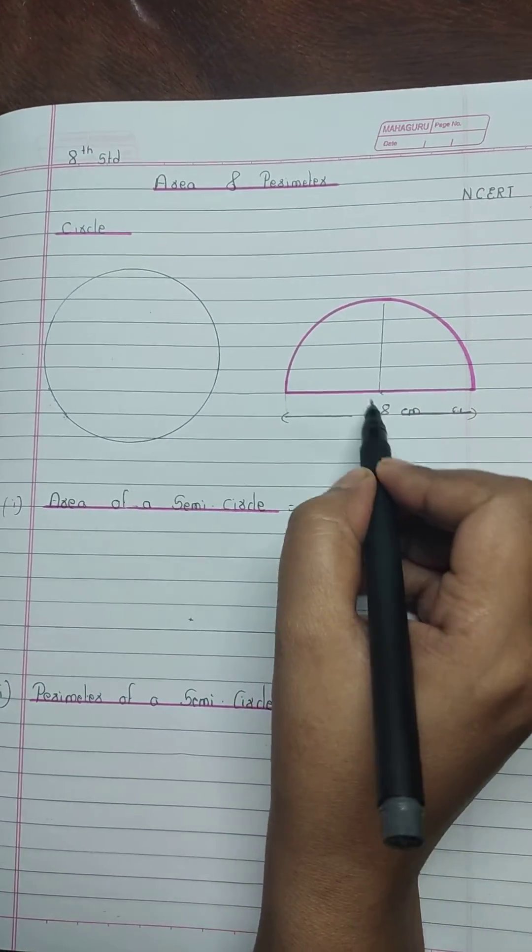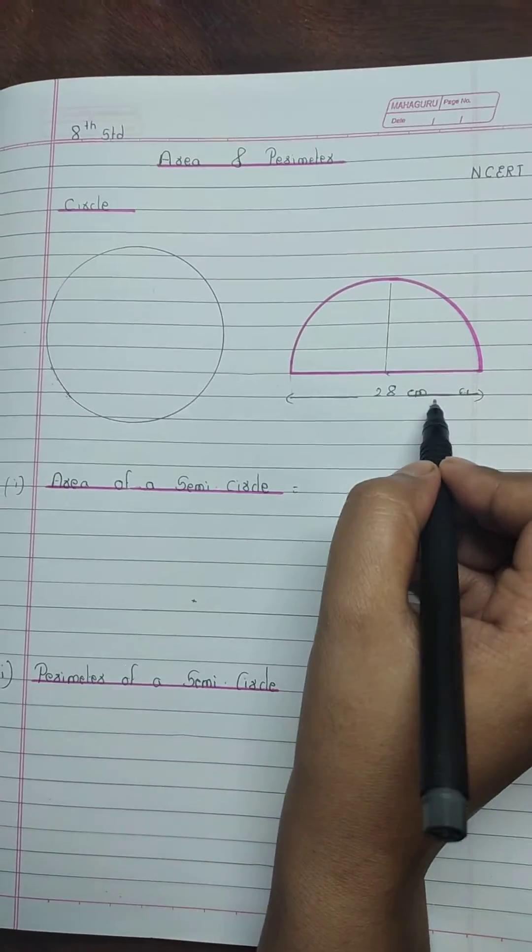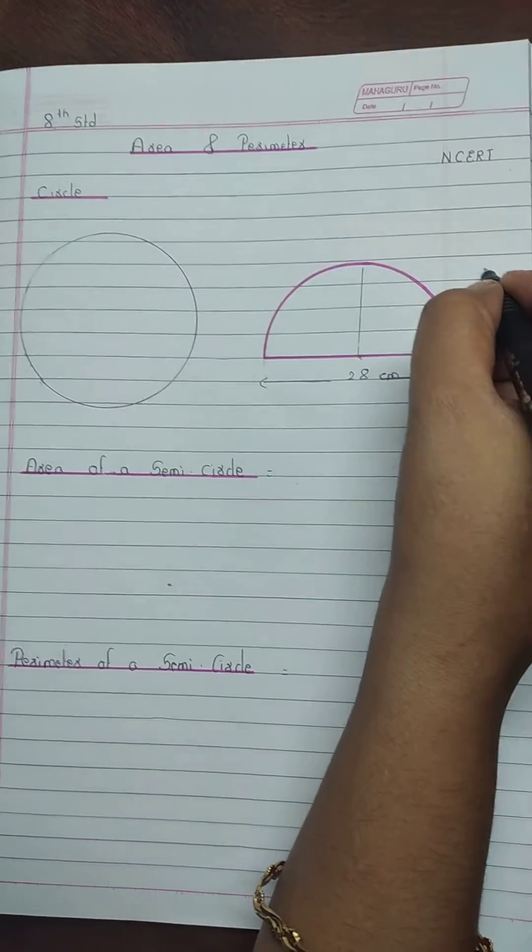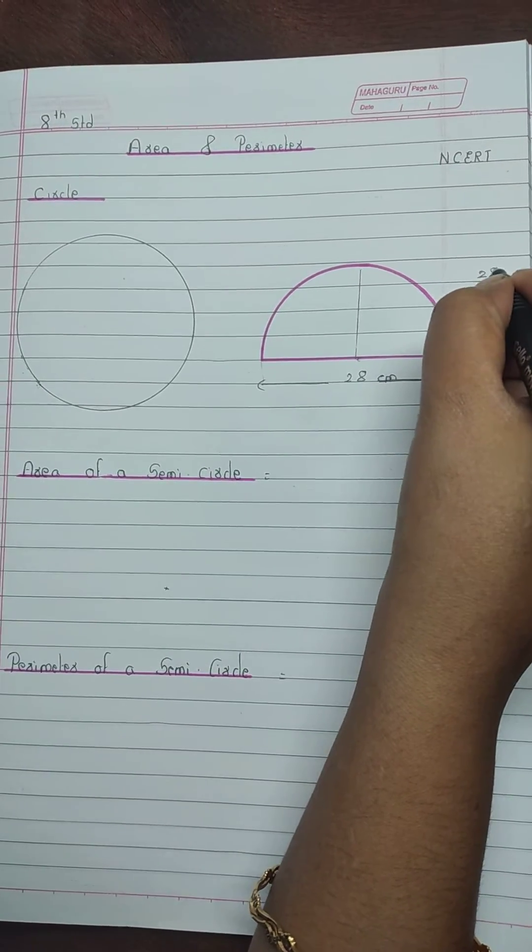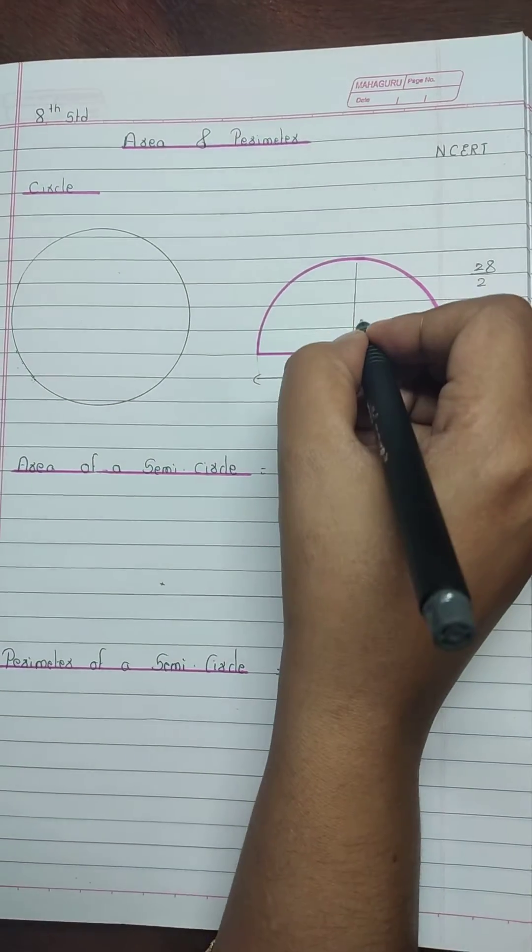Suppose the diameter of a semicircle is 28 cm. Then the radius will be half of the diameter, that is 28 divided by 2. It comes to 14 cm.